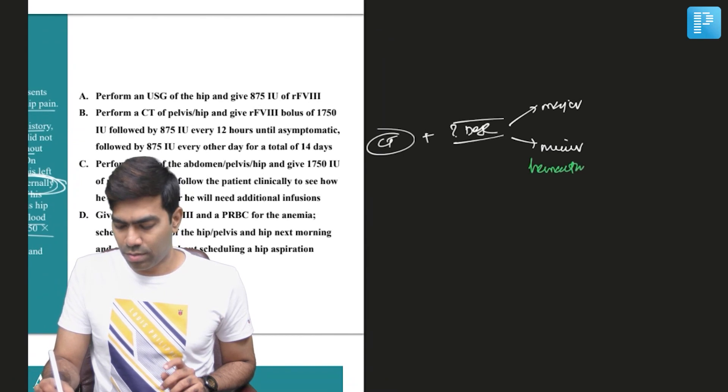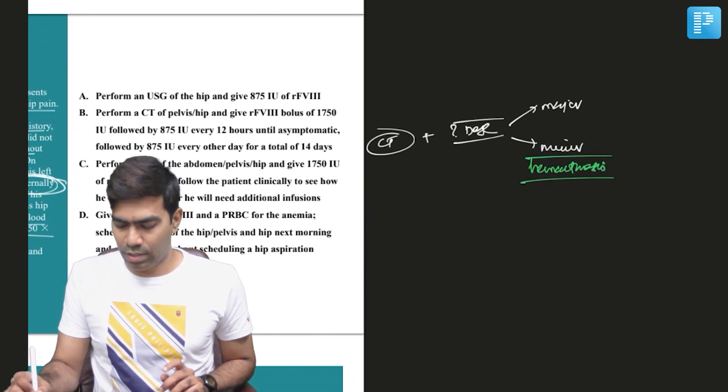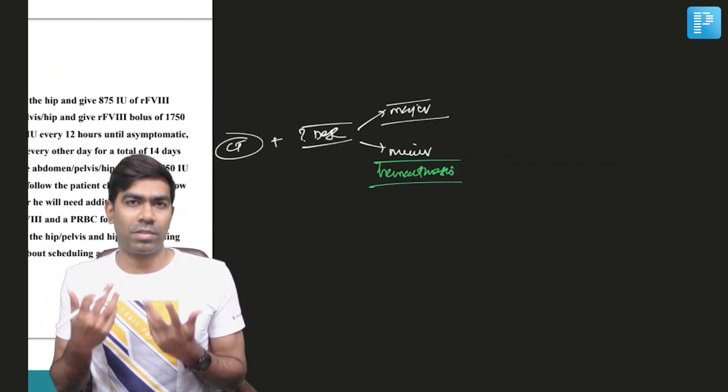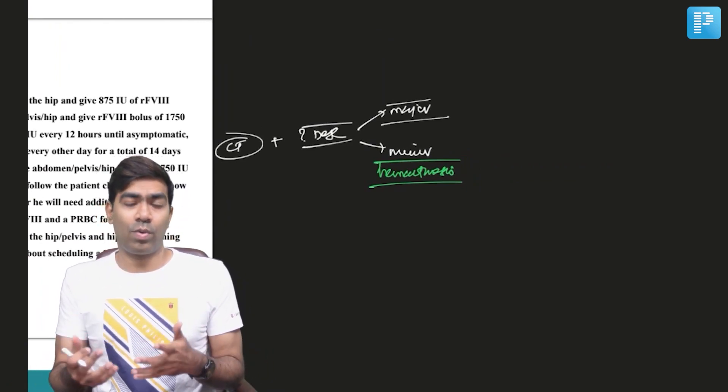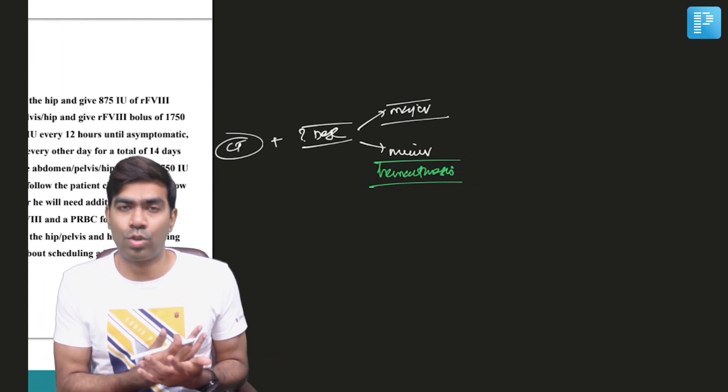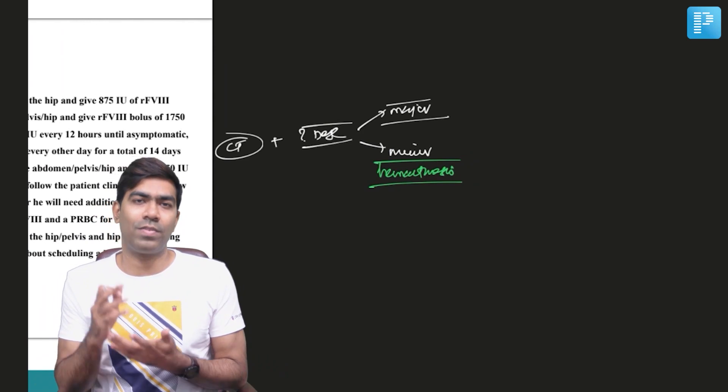Minor bleed means you're talking about minor surgeries or hemarthrosis. Major bleed means you're talking about major surgeries or conditions like intramuscular hematoma or intracranial bleed, like what is happening in this guy. This guy you are dealing with the iliopsoas bleed which is an intramuscular hematoma which is a major bleed.